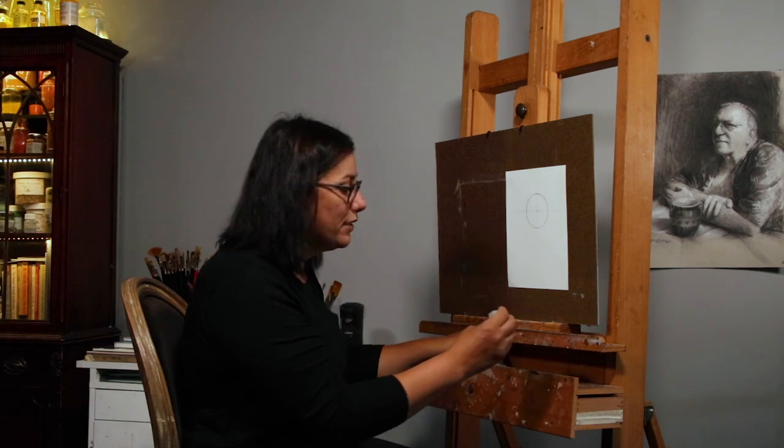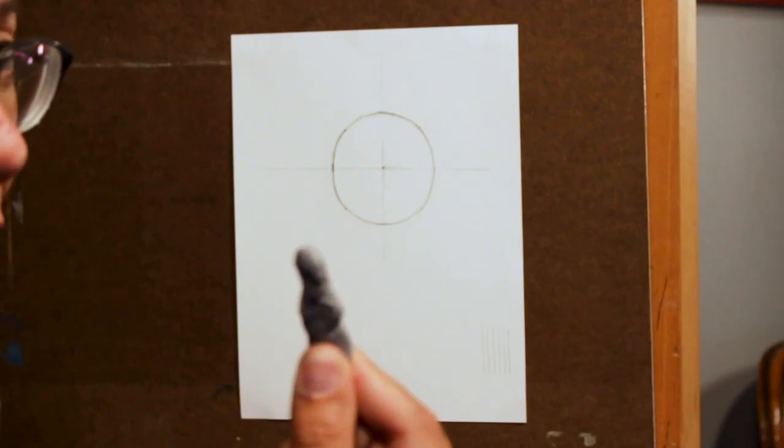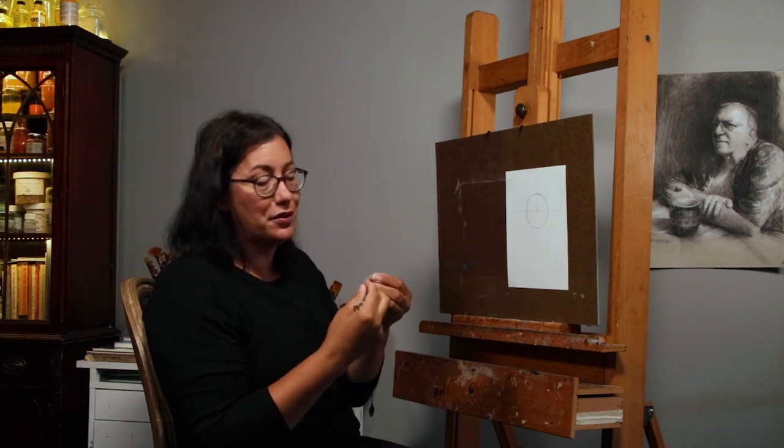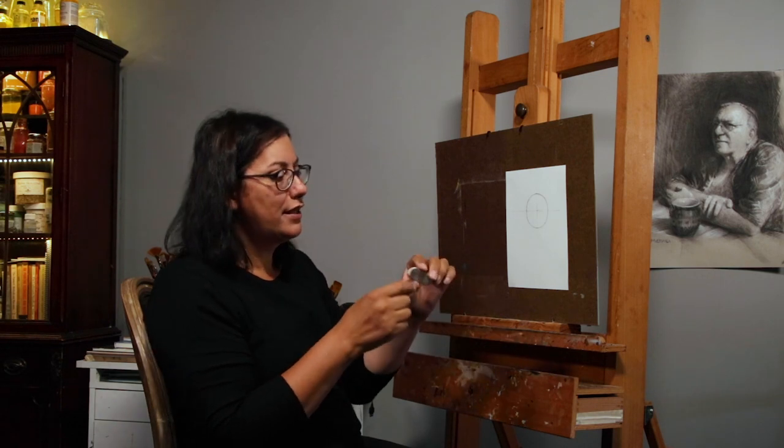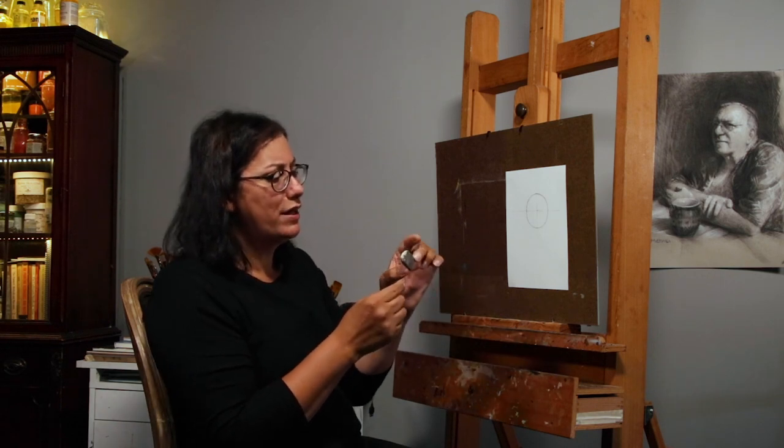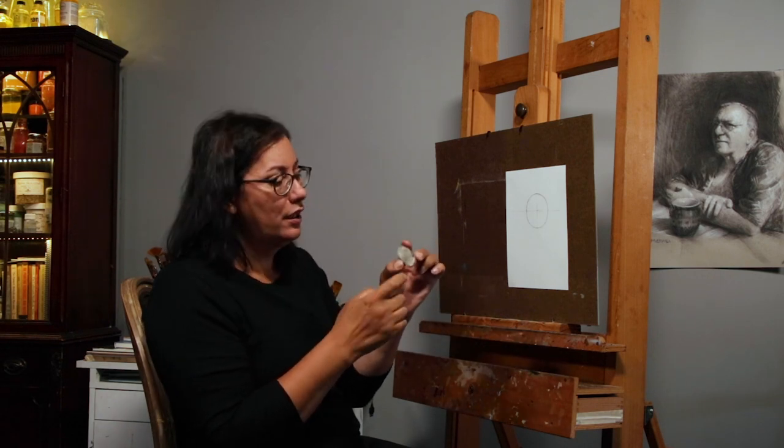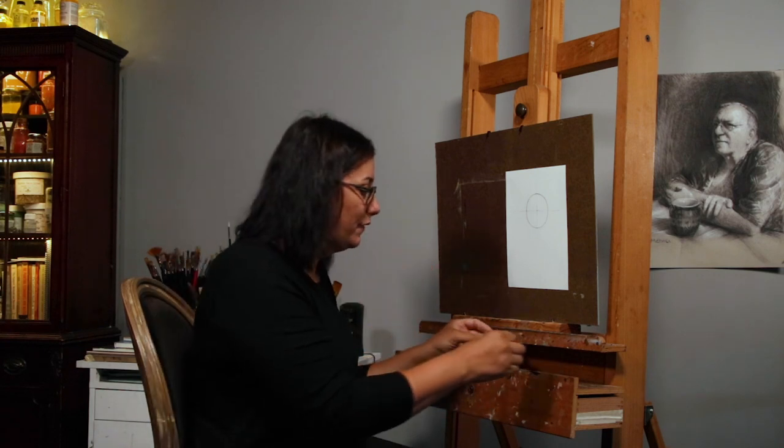Two types of erasers I'm mostly using. A kneaded eraser. This is Prismacolor I think and just a standard gray kneaded eraser and I think this is a Staedtler white eraser. I'll link all this stuff in the description.